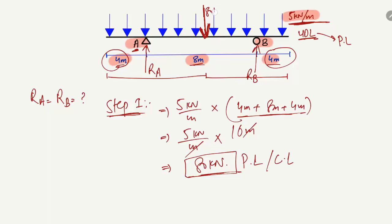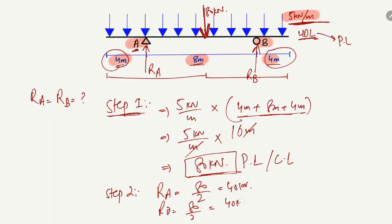Step 2: Divide the total concentrated load by 2 to get each support reaction. So RA = 80 ÷ 2 = 40 kN, and similarly RB = 80 ÷ 2 = 40 kN. Half the load is taken by support A and the other half by support B.